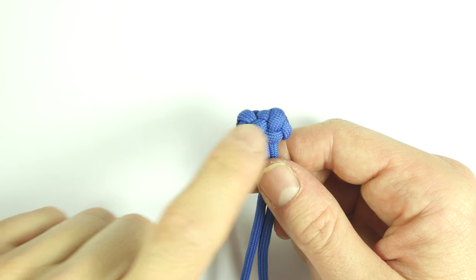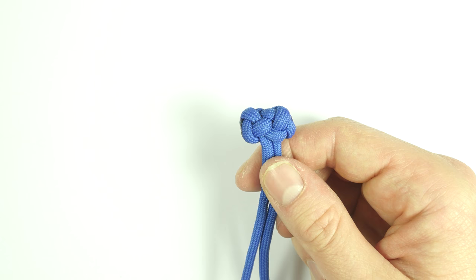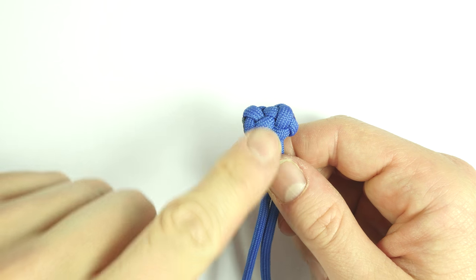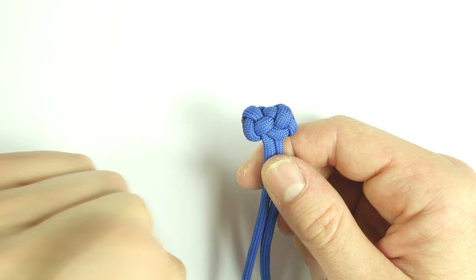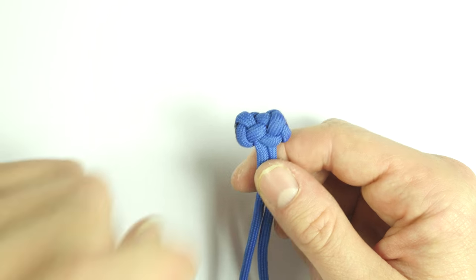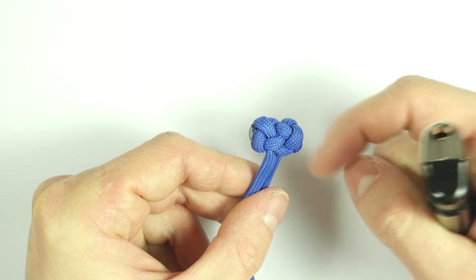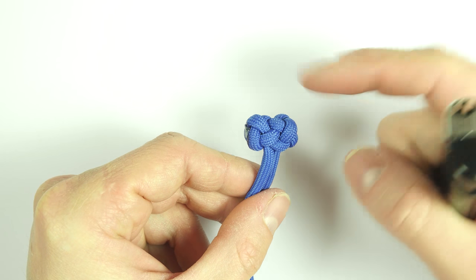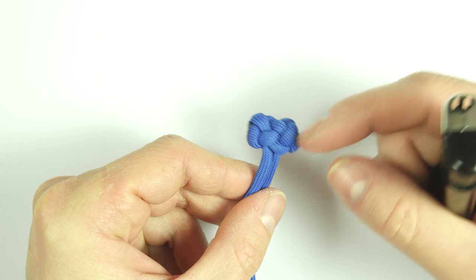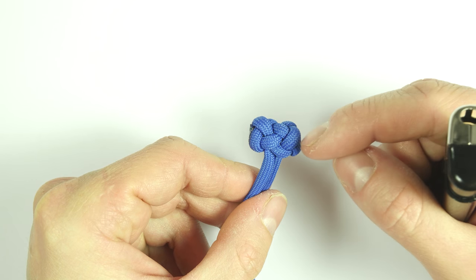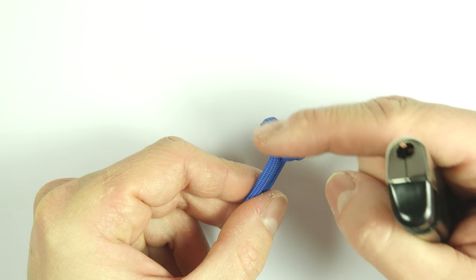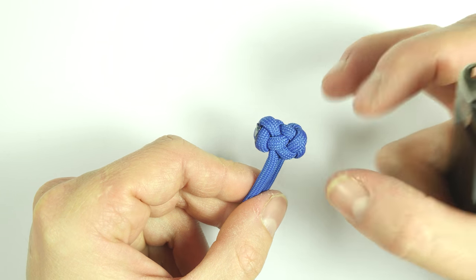Finally, to make the toggle knot even more rigid and stiff, people place it in hot water. What I like to do is take my lighter and simply heat up the entire toggle knot a bit. I don't want to damage the paracord by melting too much, I just want to heat it up to stiffen it up a bit more.